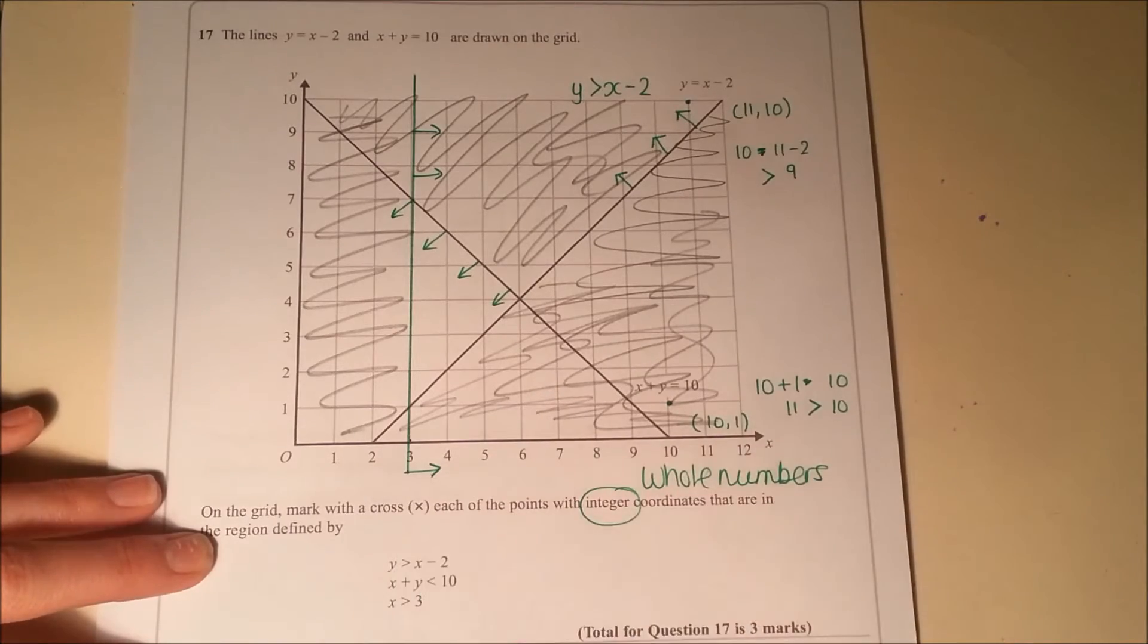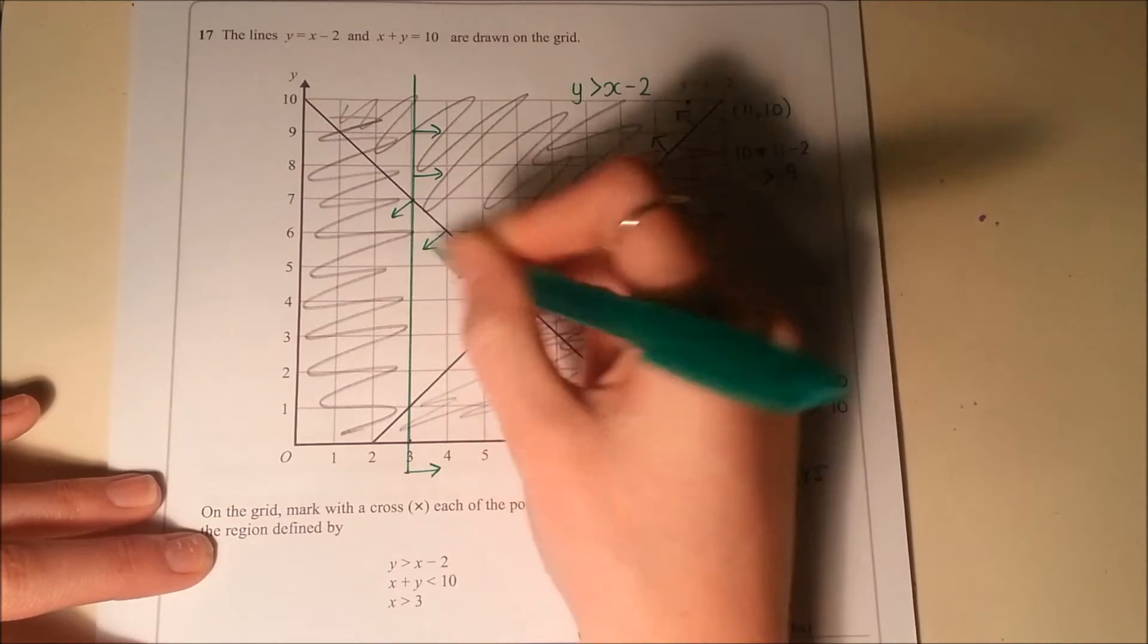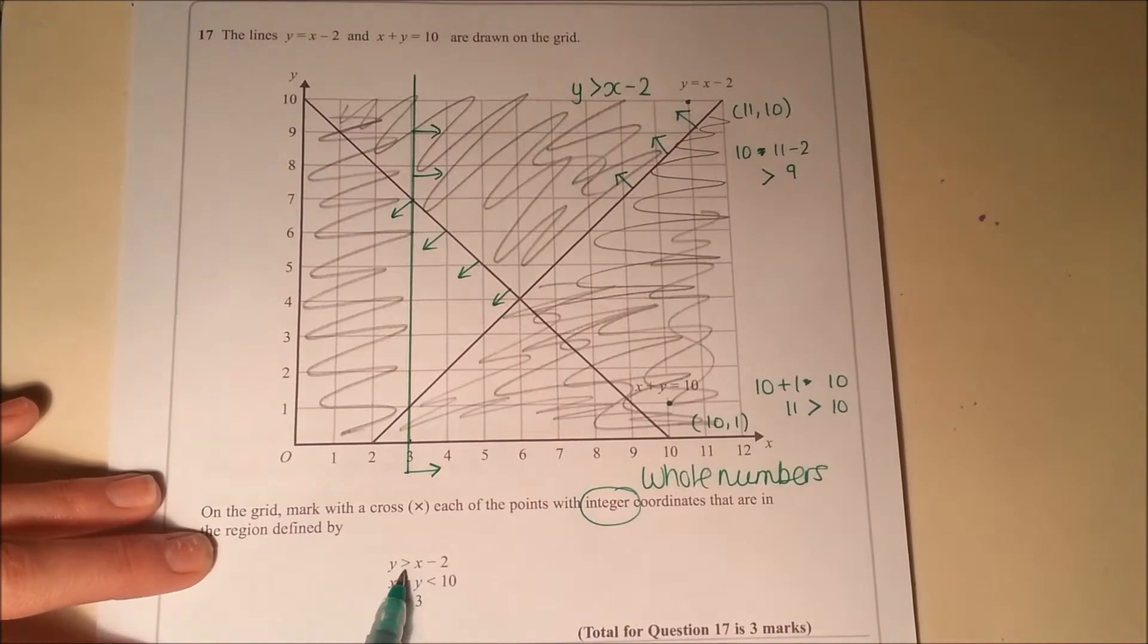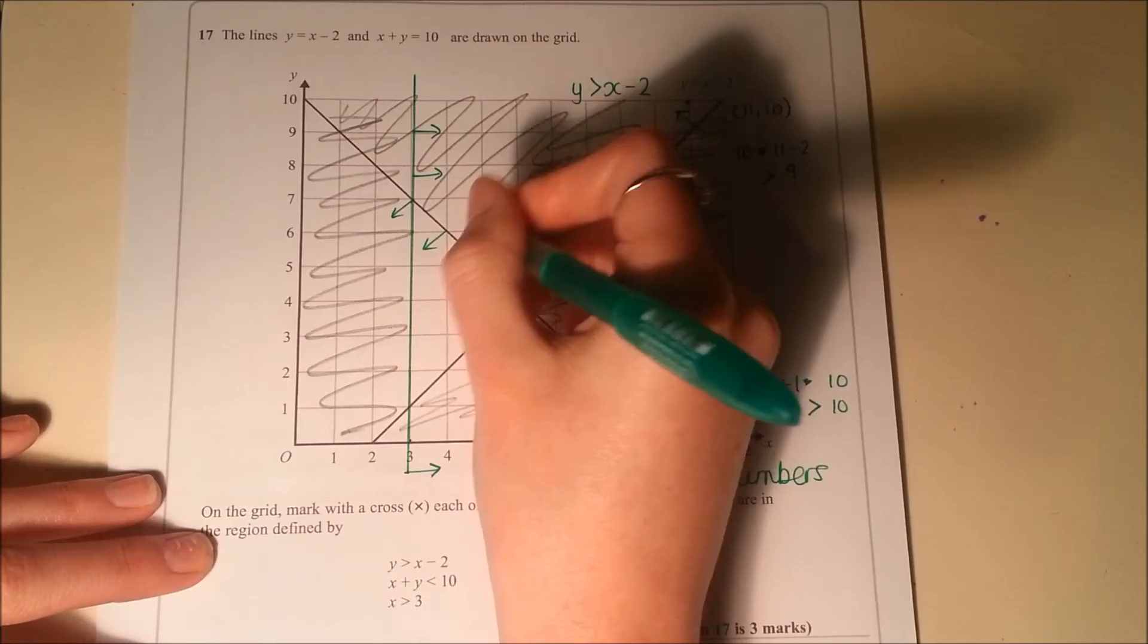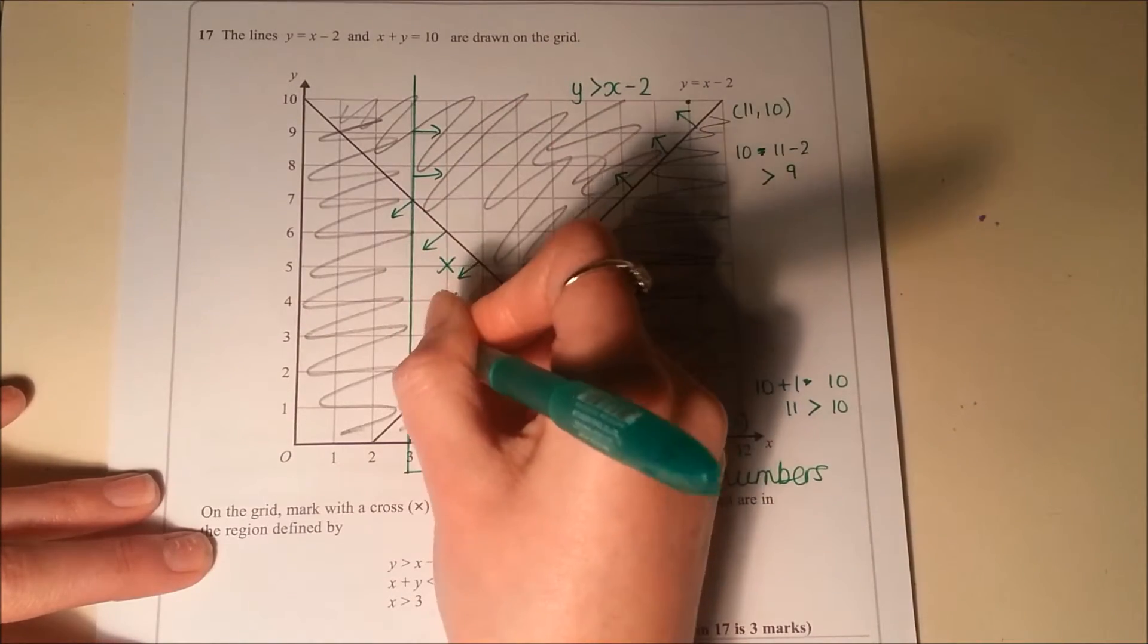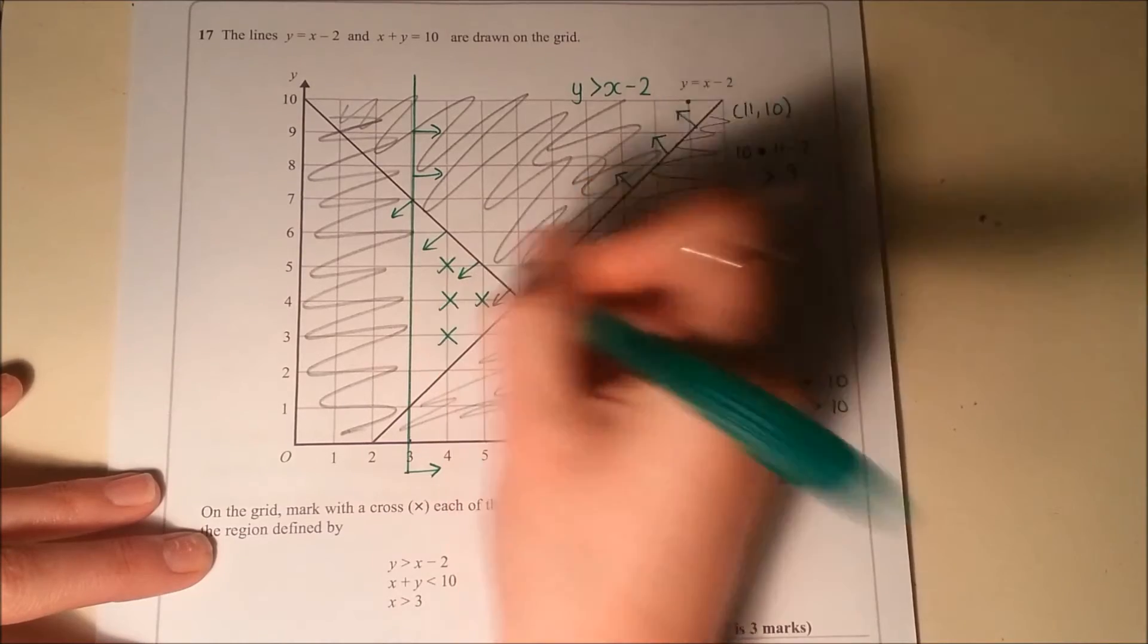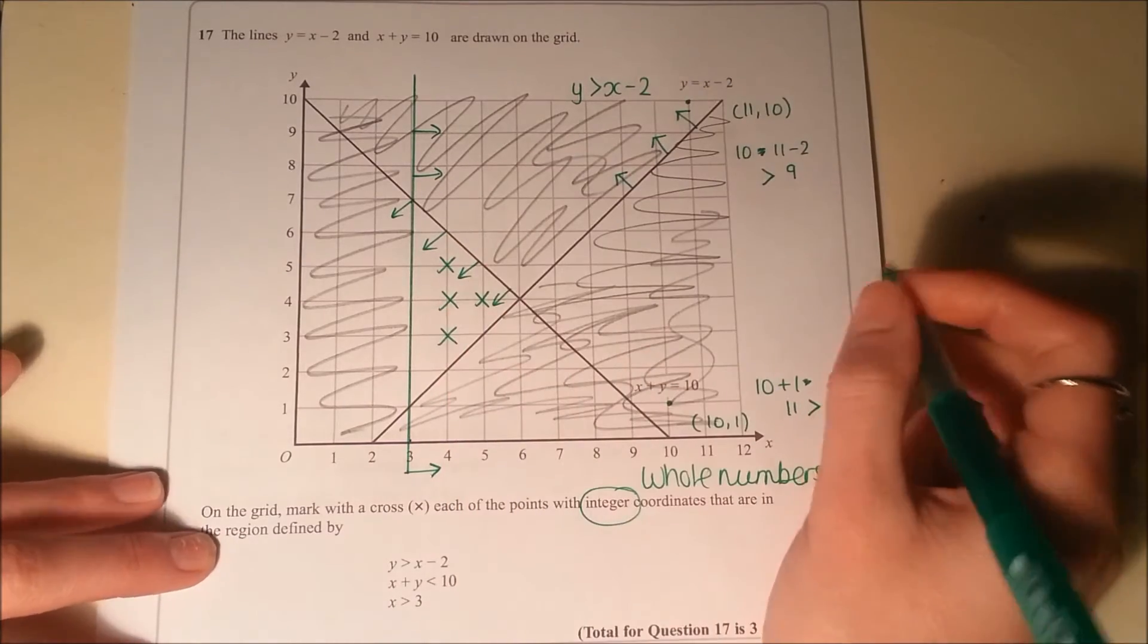So all of the points that have got integer coordinates that satisfy these is anything that's inside there. You'll notice we've got all strictly either greater than or less than signs, which means we can't have any that are on the lines. They've got to be inside the region. So we've got one there, there, and there, and there. So we've actually only got four points that satisfy the inequality.